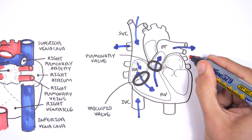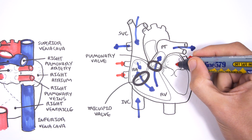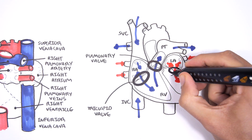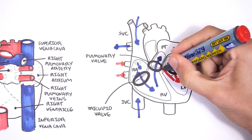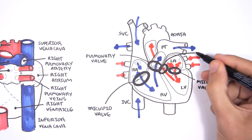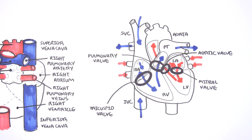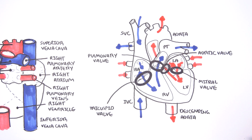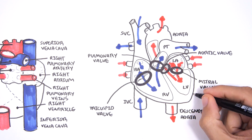From the lungs, blood returns to the left side of the heart via the pulmonary veins into the left atrium. From the left atrium, blood flows to the left ventricle via the mitral valve. From the left ventricle, the blood is pumped up the aorta via the aortic valve. Blood then flows up to the upper body or down to the lower body via the descending aorta. Here is the apex of the heart.